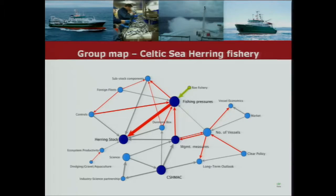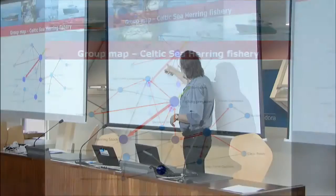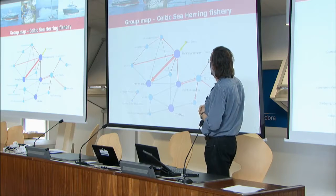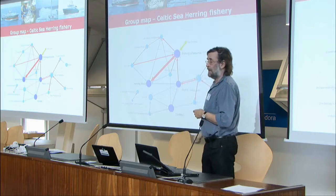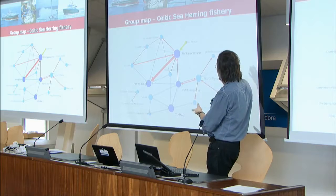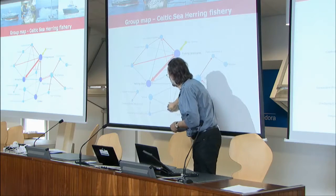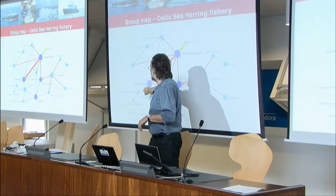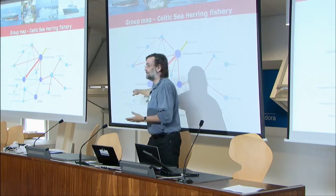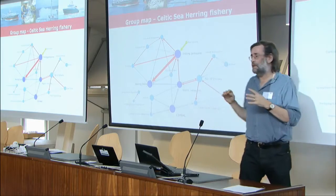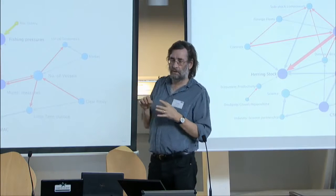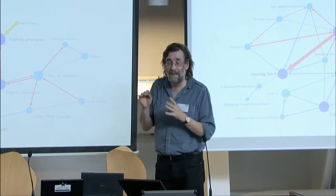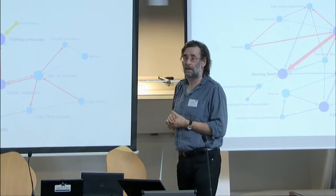This is a bit easier to understand. Here's the herring stock — what we were looking for information about. Here are the influences: the red ones are negative, and the thickness of the arrow expresses how important people think they are. The pretty obvious one is that fishing pressure has a direct impact on herring stocks. Down here, with a tiny little possibly positive link, is ecosystem productivity. What we've got is that this group of stakeholders in general recognised that ecosystem productivity was an important factor in managing their fish stock, but not a particularly important one.